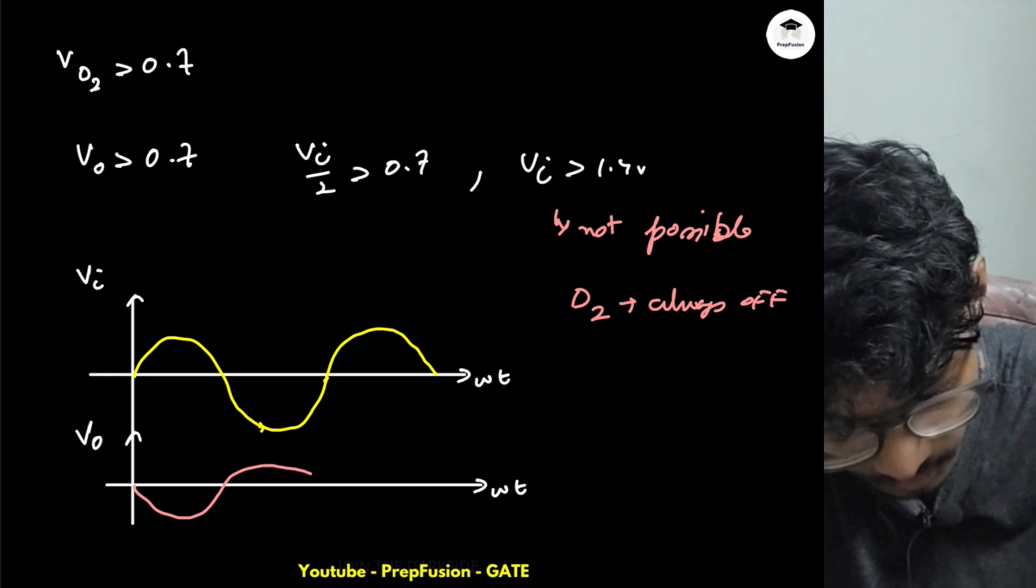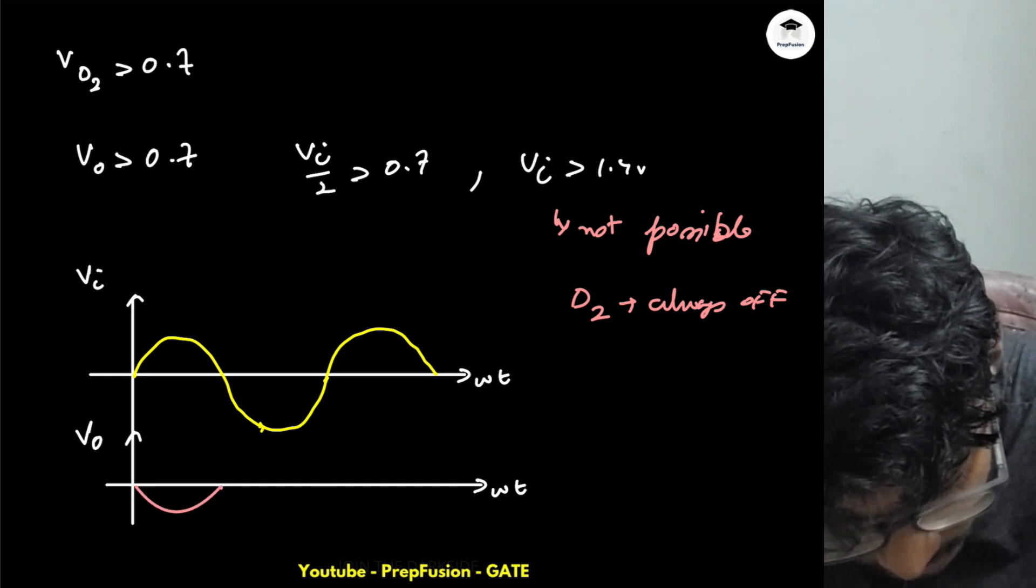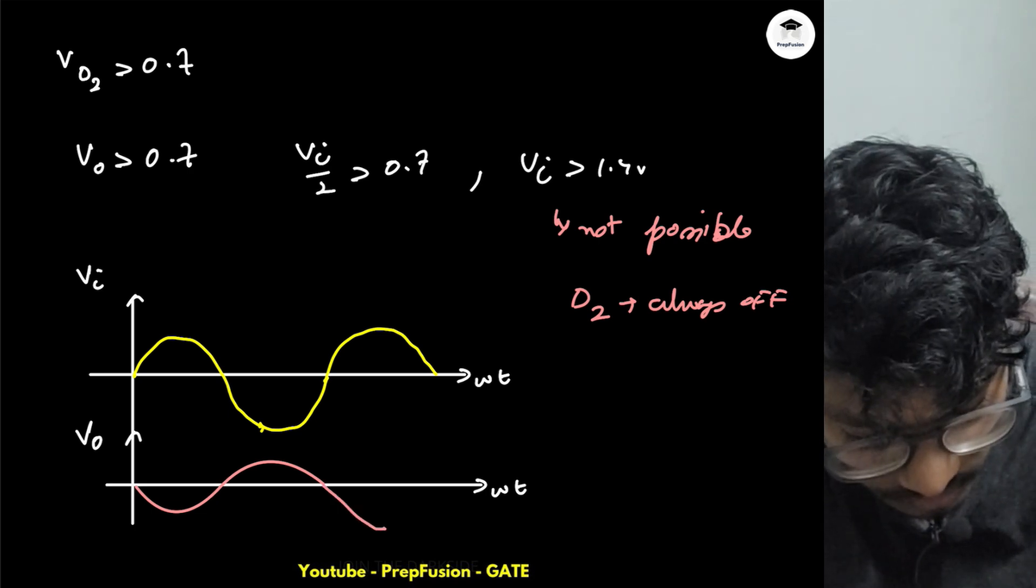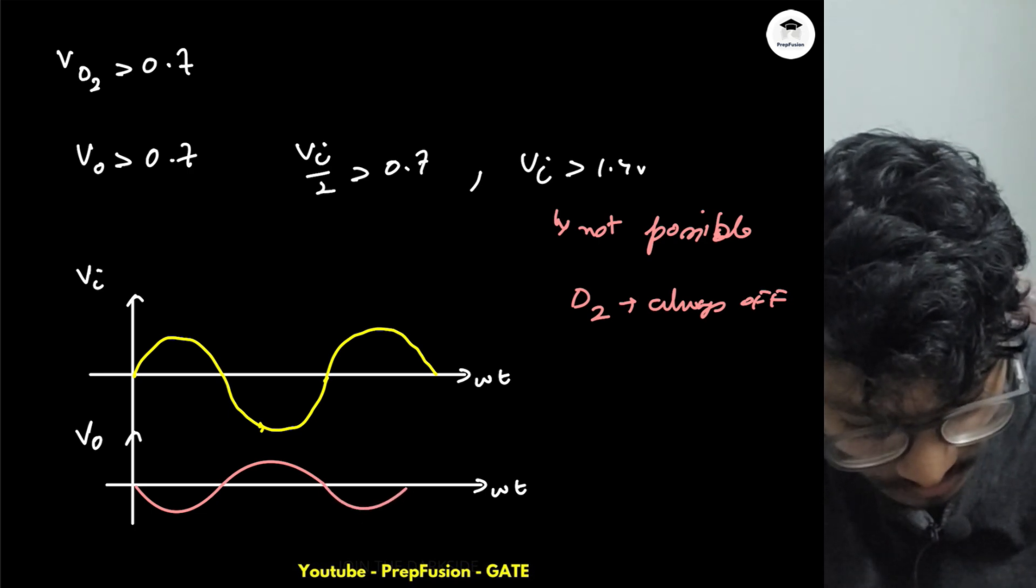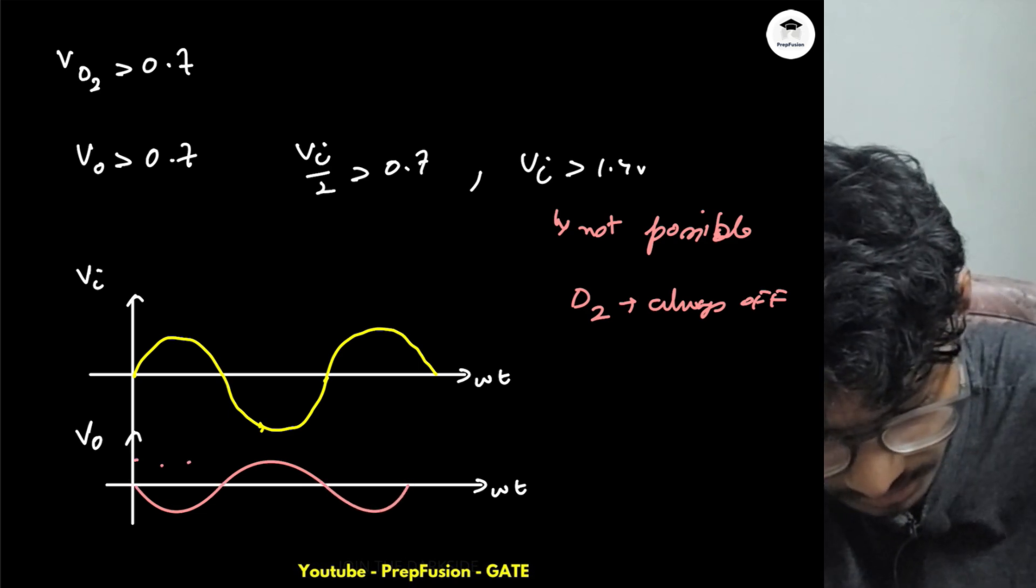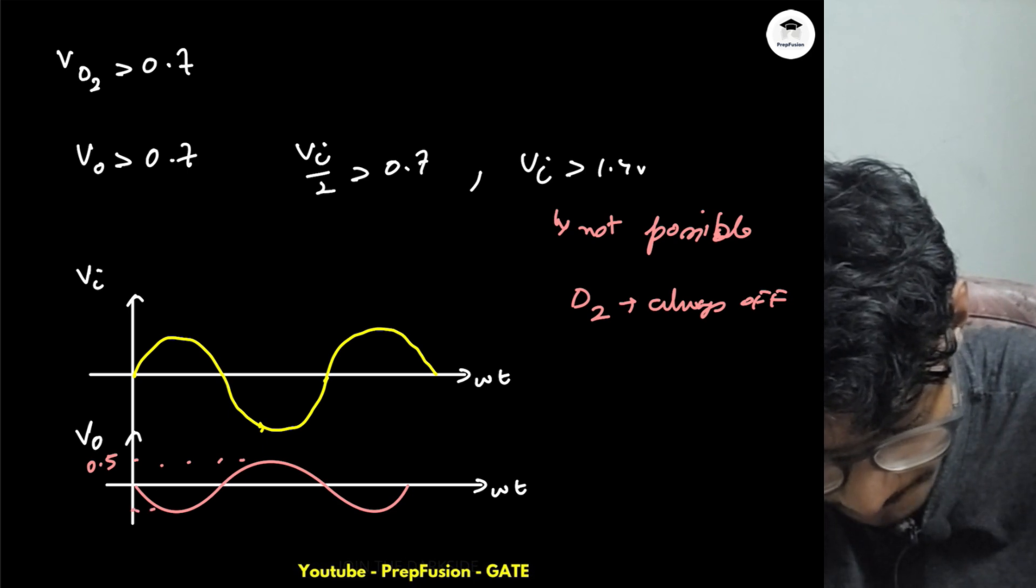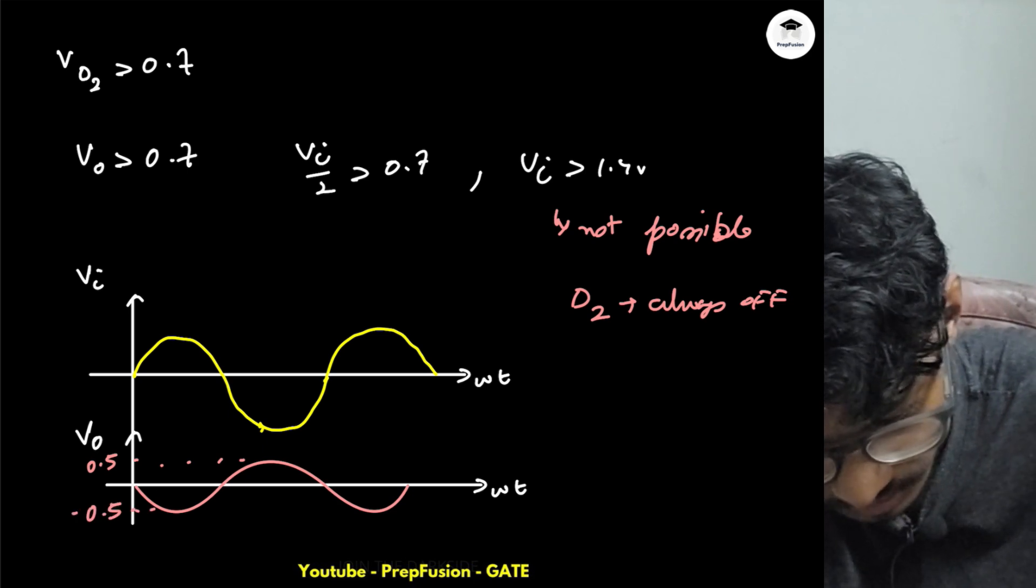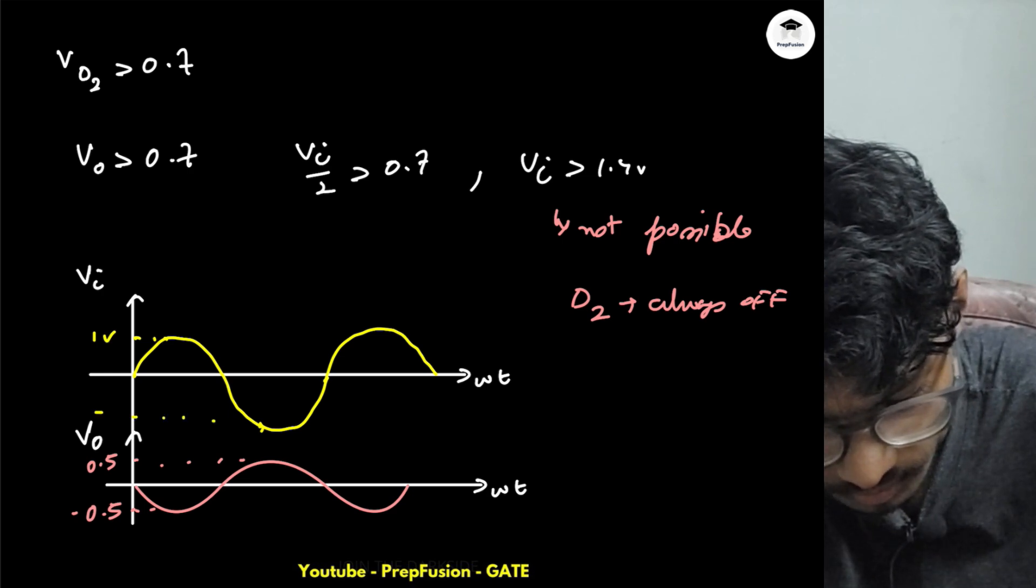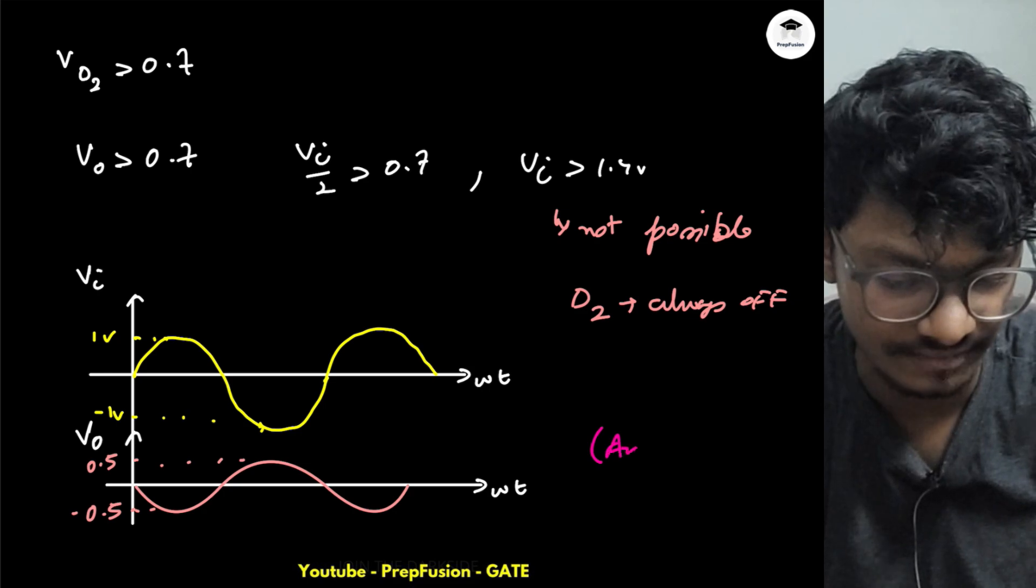Apologies for my drawing because it is not perfect. Because it is inverted, whenever this will be positive, this will be negative because it has a negative sign from the negative feedback. This time the peak will actually be from plus 0.5 to minus 0.5 volts, and this peak will be from 1 volt to minus 1 volt. So this will be your answer.